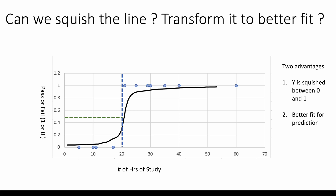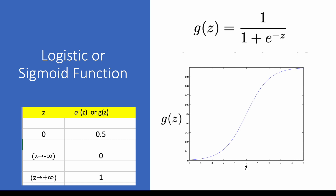There are two advantages of doing this squishing. One is this whole curve is squished between zero and one, so the problem of extending beyond one and going into the negative direction has gone away. The second advantage is better prediction - we are able to predict clearly and correctly. This particular S-shaped function is called a logistic function or a sigmoid function. You may have heard these terms - logistic or sigmoid - this is what it is.